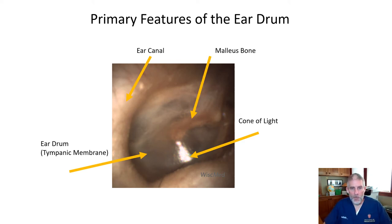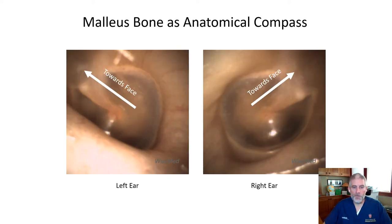The last primary feature of the eardrum that you can almost always see is the malleus bone. The malleus is the first bone in the chain of three bones that communicate the movement of the eardrum to the inner ear. It is attached to the eardrum and moves with it. One of the great things about the malleus bone is that it serves as an anatomical compass — you can always tell which ear you're looking at. The malleus bone always points towards the face. In the left ear, the malleus goes from the center of the eardrum up to about the 10 o'clock position. For the right ear, it goes to about the 2 o'clock position, again pointing towards the face. This is one of my favorite features of the malleus bone, and one of my favorite quizzes to give medical students or residents.